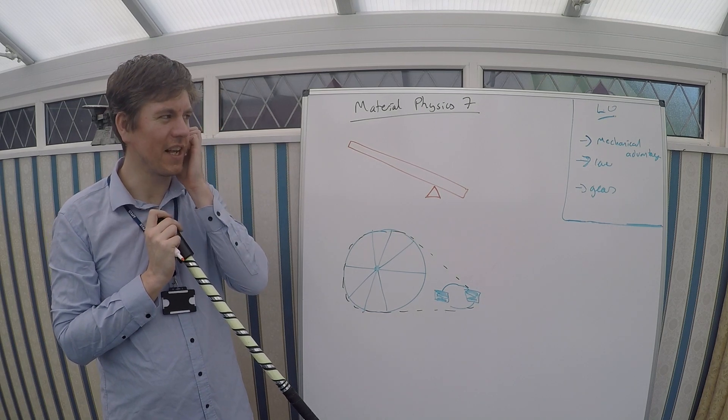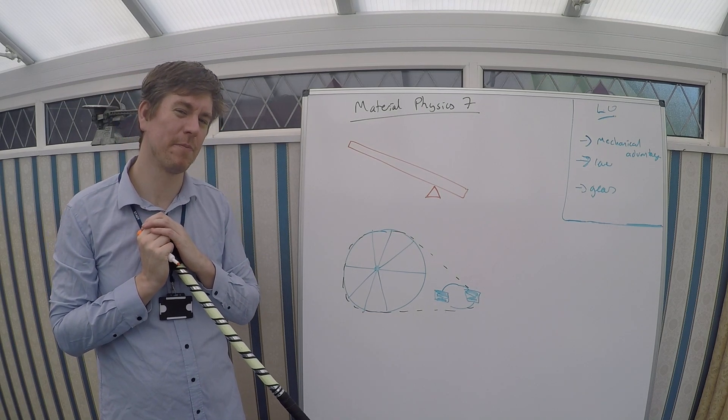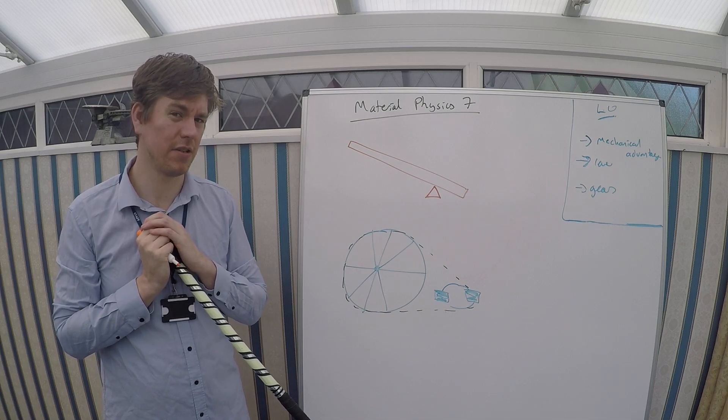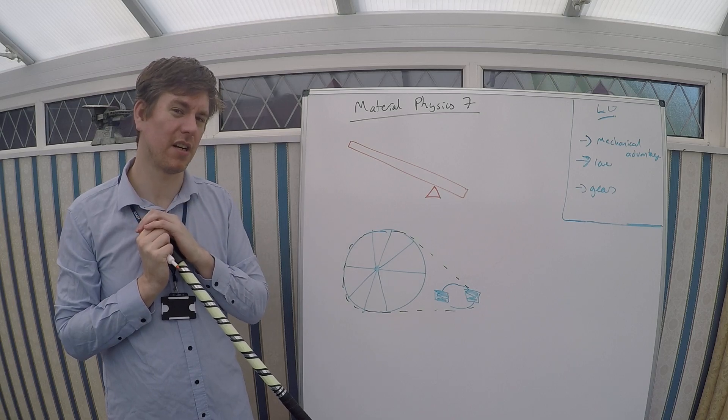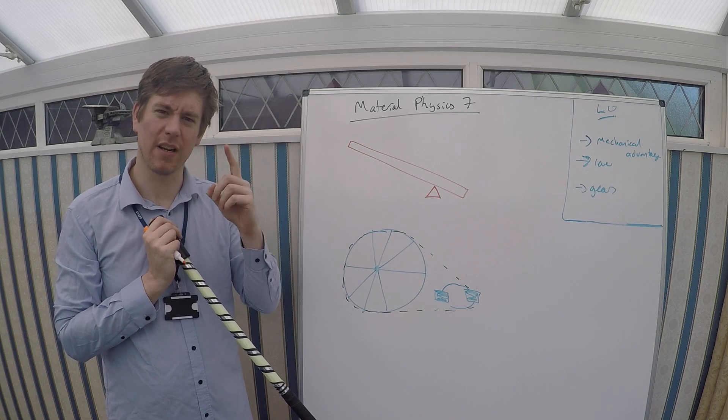Hi, and welcome to Material Physics 7. Today we're going to be looking at something called mechanical advantage. We're going to be doing this in a turning context, but we're going to start in just a more linear context.